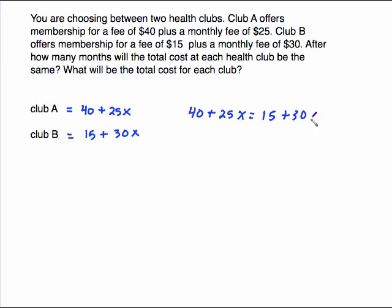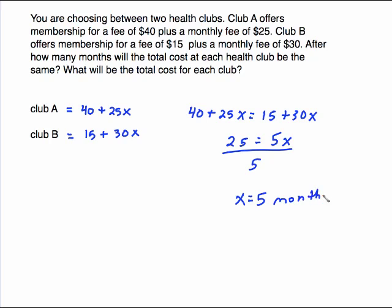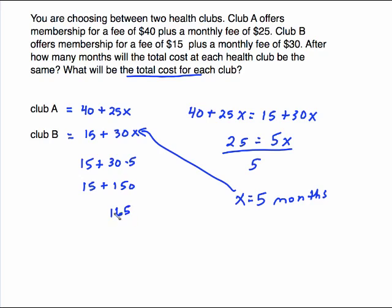We need to get x's on one side and numbers on the other. Subtract 25x from both sides gives you 5x on the right. Subtract 15 from both sides gives you 25 on the left. Divide both sides by 5 and x equals 5 months. They also ask what the total cost will be, so plug 5 into either expression: 15 plus 30 times 5 equals 15 plus 150, which is $165. After 5 months, that's how much you've paid at both clubs.